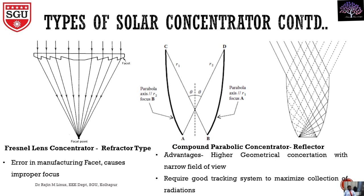Advantages are it has high geometrical concentration and a narrow view — light will narrowly fall down to the focal point. However, it requires a good tracking system to maximize the collection of radiation. That is another disadvantage of the compound parabolic concentrator. This is also a reflector type.